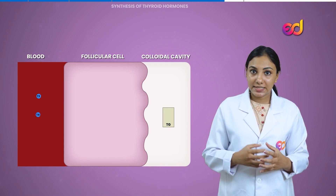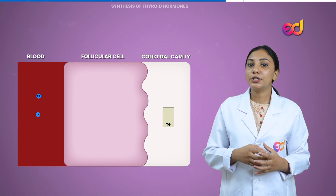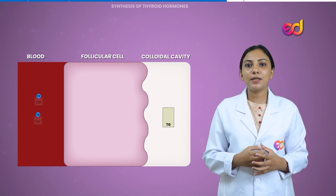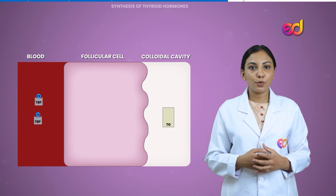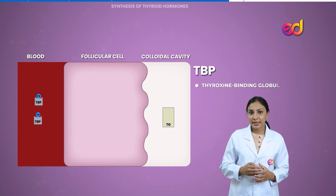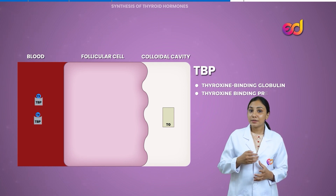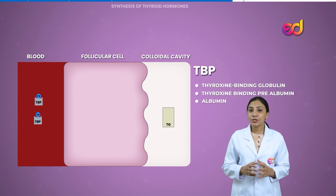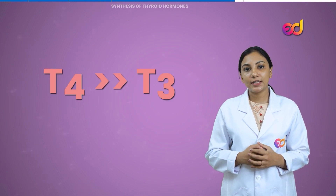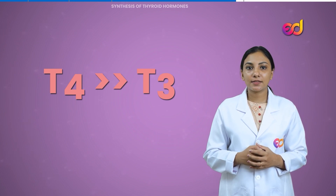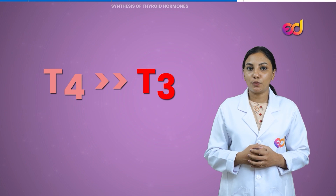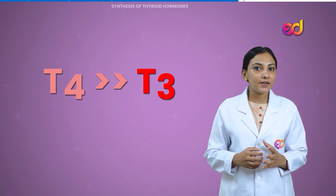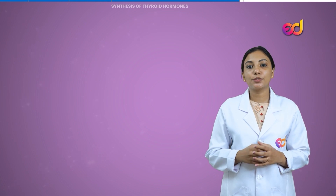In the bloodstream, T3 and T4 are transported to the target cell with the help of special proteins known as thyroid binding proteins. These include thyroxine-binding globulin, thyroxine-binding prealbumin, and albumin. The point to remember is that T4 is secreted more than T3 by follicular cells, but T3 is 10 times more active than T4.